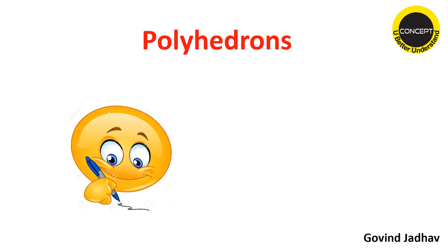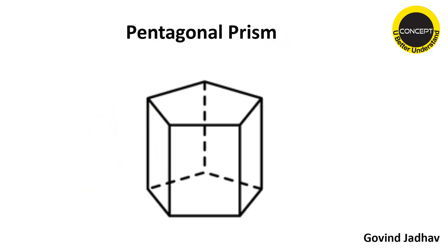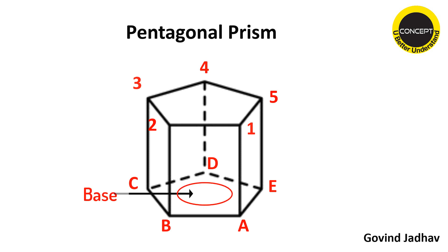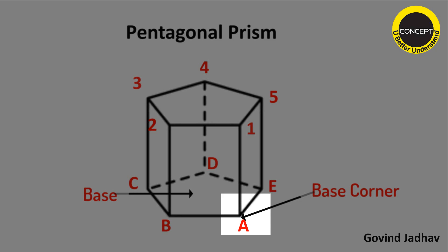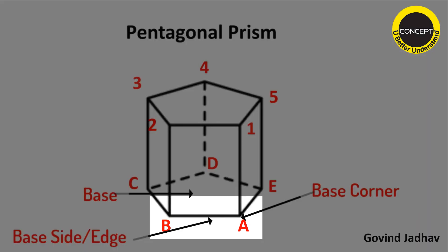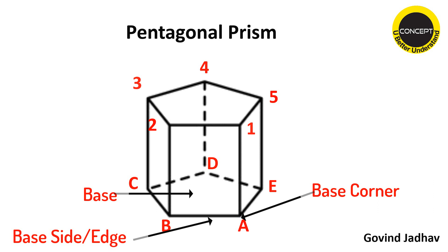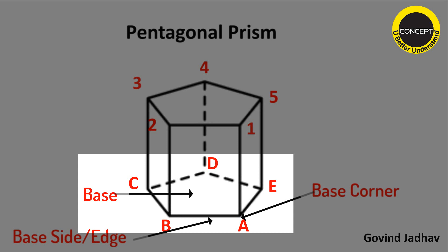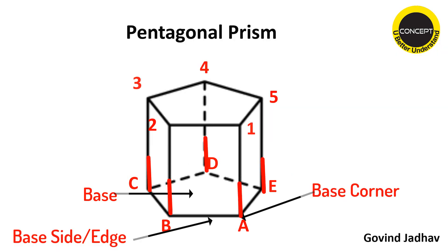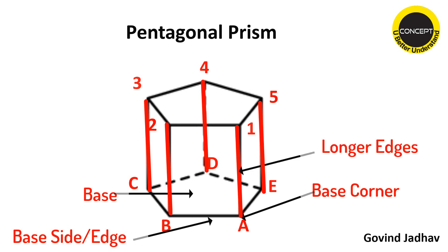Now let's look at the parts of each solid. Take the example of a pentagonal prism. Name the base corners as A, B, C, D, E and the top corners as 1, 2, 3, 4, 5. The bottom surface is the base; A is called a base corner; A-B is called a base side or base edge; the complete surface A, B, C, D, E is called the base. A1, B2, C3, and so on are called longer edges. The surface A-B-2-1-A is called a face, and its shape is rectangular — that's why it is called a rectangular face. For every prism, the face will be rectangular.